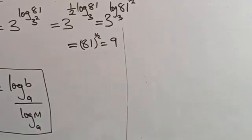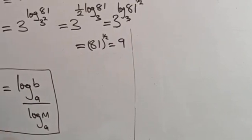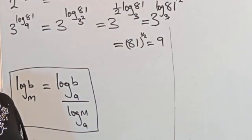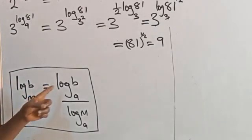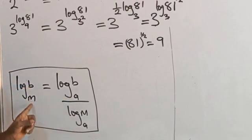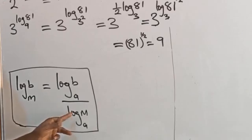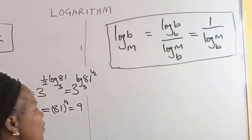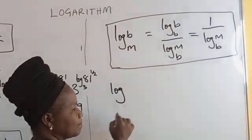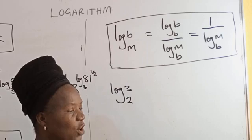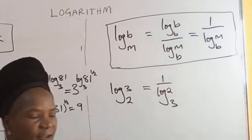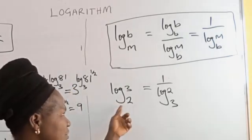We call this the transformation rule: log of B in base M is equal to log of B in base A over log of M in base A. We use this to change the base of a logarithm to a desired base. For example, log of 3 in base 2 is equal to 1 over log of 2 in base 3. Depending on the problem, if you want to change your base to base 3, that is what you do.